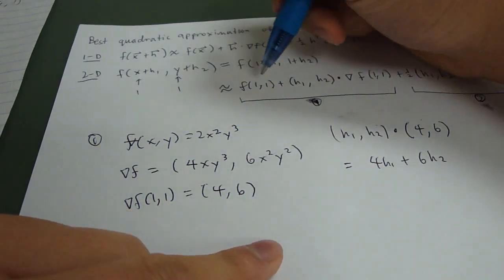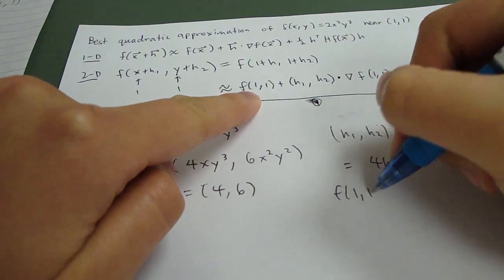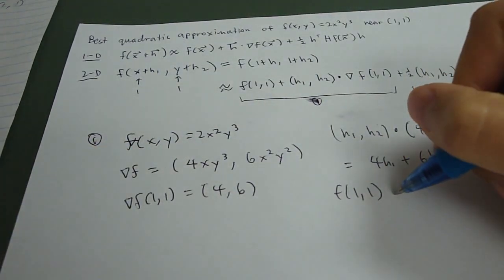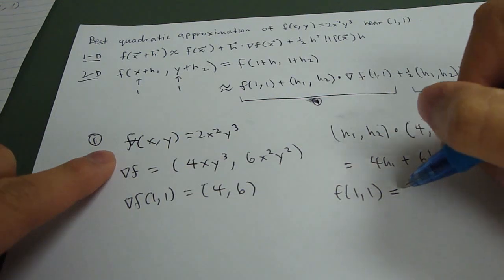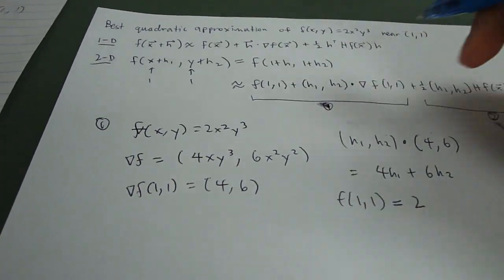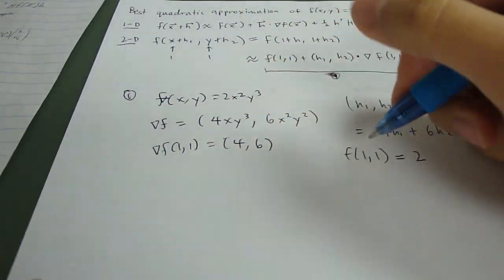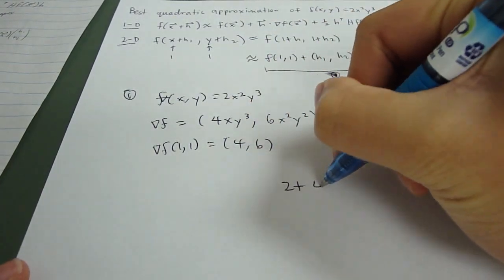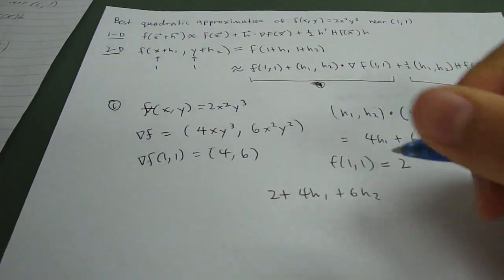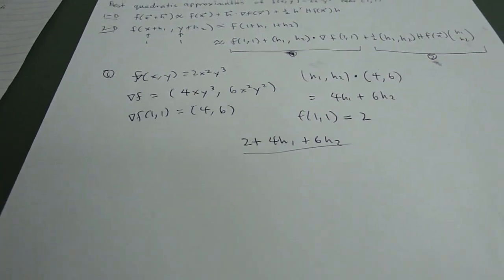And then we have this portion, so you plug one and one back into the original equation, you get 2. This actually, this part of the equation actually gives you the best linear approximation. So, the best linear approximation would be 2 plus 4h1 plus 6h2, which is these two together, which is this part. But that's not what we're trying to find, we're trying to find the quadratic approximation.